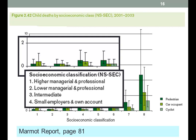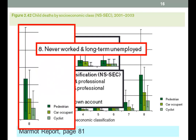When we look at a low socio-economic category — that is, people who have never worked or are long-term unemployed — for a start we see the numbers who are killed are much higher. The number of pedestrians killed are much higher, again probably because they don't have cars, and quite a limited number of cyclists.